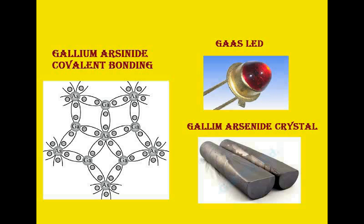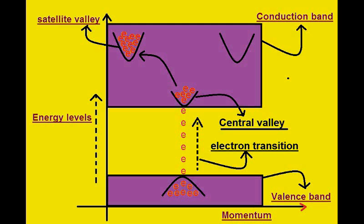Gallium arsenide has a two-valley structure. In the conduction band, it has a central valley and a satellite valley. The satellite valley has a larger size and can accommodate more electrons — meaning more mass — while the central valley is smaller and holds fewer electrons. Because of this size difference, the mobilities and density of states vary between the two valleys.